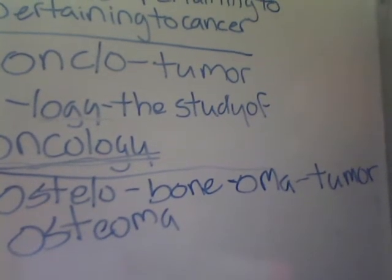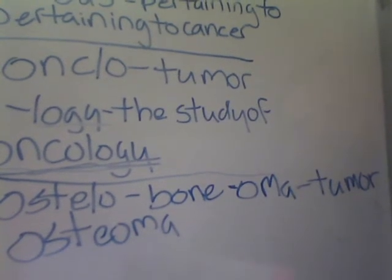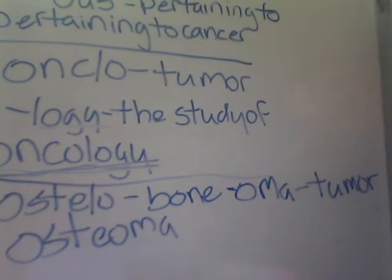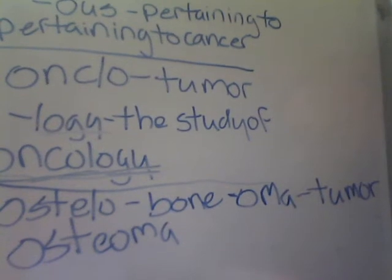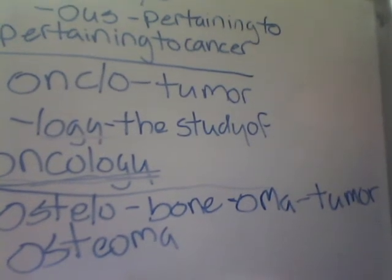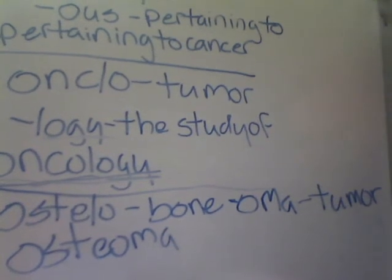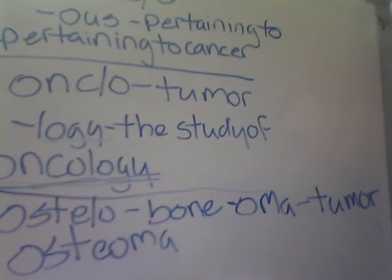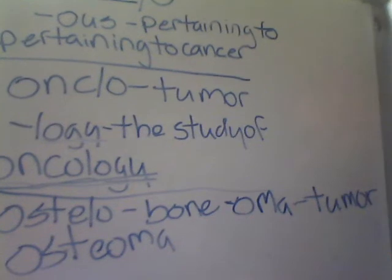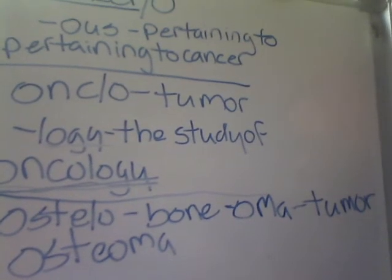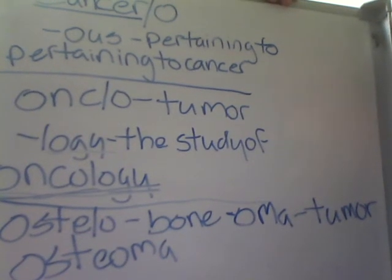If we have a combining form such as osteo, which means bone, and we add the suffix -oma, meaning tumor, then we have the term osteoma, which would be a cancer of bone tissue. Cancer itself is a rampant, uncontrolled growth of cells that ultimately brings about issues with surrounding cells and tissues, and in some cases can cause death.